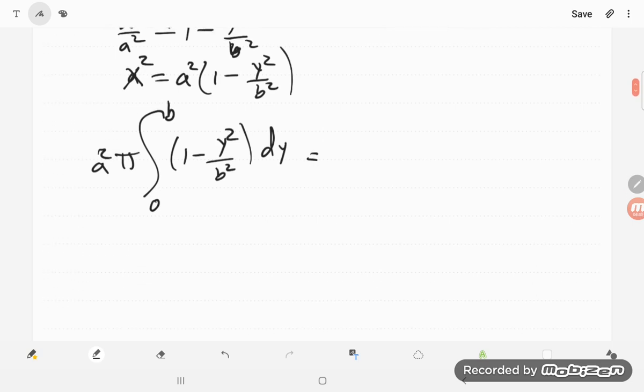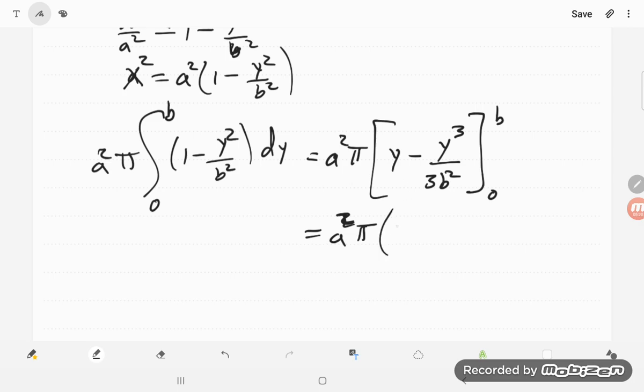This is then a squared pi. And when I do my anti-derivatives, I get a y and a minus y cubed over 3b squared from 0 to b. And when I put that in there, I get a squared pi times, b cubed over b squared, so that's just a b over 3.